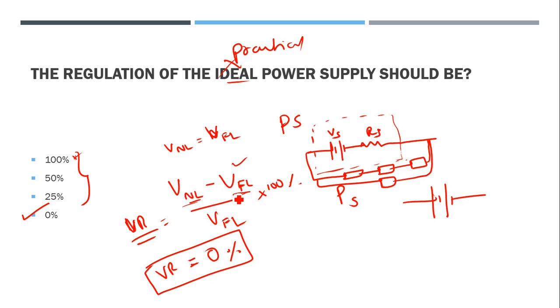Hundred percent regulation means full load voltage is zero, which is a huge loss and not practically acceptable. In practical cases, due to load impedance, voltage regulation is 3 to 5 percent or up to 10 percent. Full load voltage might be 215 or 223 volts instead of 230.